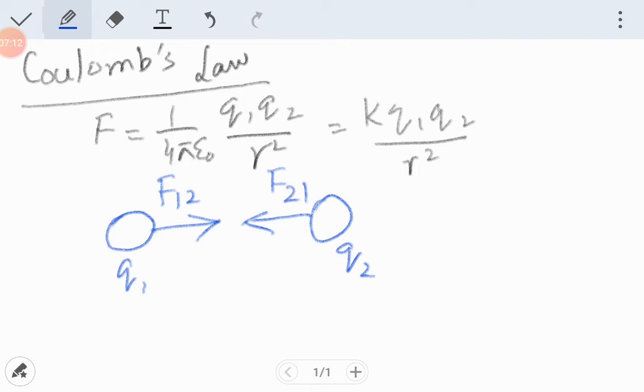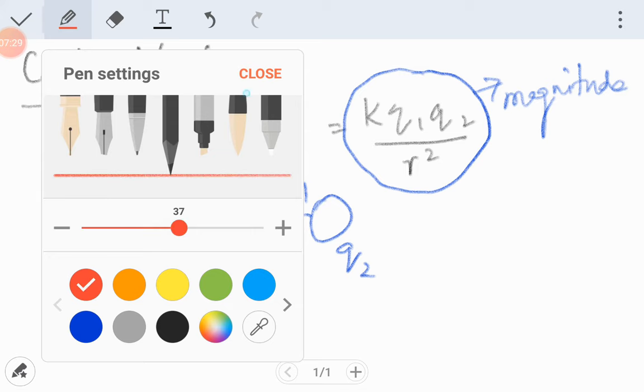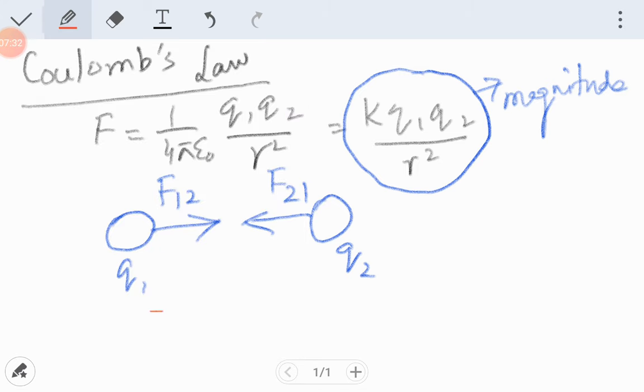Now I am coming to the vector form. This that you studied in class 10 is actually the magnitude of the force. Now we are coming to vector form. As you studied unit vectors in class 11, if I say that the unit vector from charge 1 to charge 2 is r̂₁₂, a unit vector is a vector with magnitude 1 and some direction. It denotes the direction. And the unit vector from charge 2 to charge 1 is r̂₂₁.